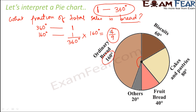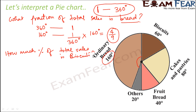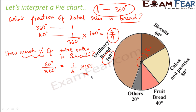Similarly, if we ask how much percentage of total sales is biscuit — for biscuits, the angle is 60 degrees. So the fraction for biscuits would be 60 divided by 360, which is 1 by 6. That means 1 sixth of the total sales is for biscuit. Now here we have to express it in percentage, so we multiply by 100. We get 16.25%. So 16.25% of the total sales is biscuit.